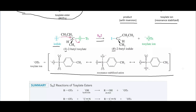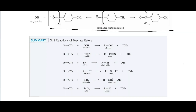The resonance stabilization of the tosylate anion as a leaving group is shown here. These are some of the reactions we can do with tosylate esters: using hydroxide, cyanide, halides, alkoxides, ammonia, or lithium aluminum hydride as nucleophiles in SN2 reactions where the tosylate ion is the leaving group.